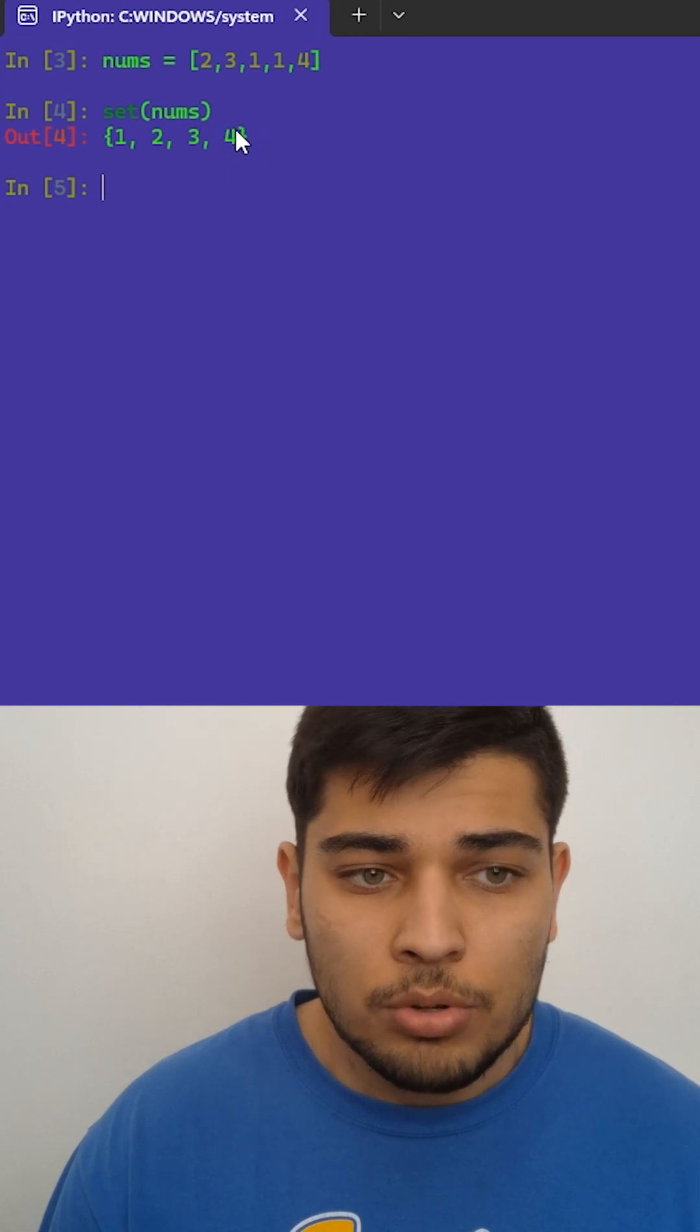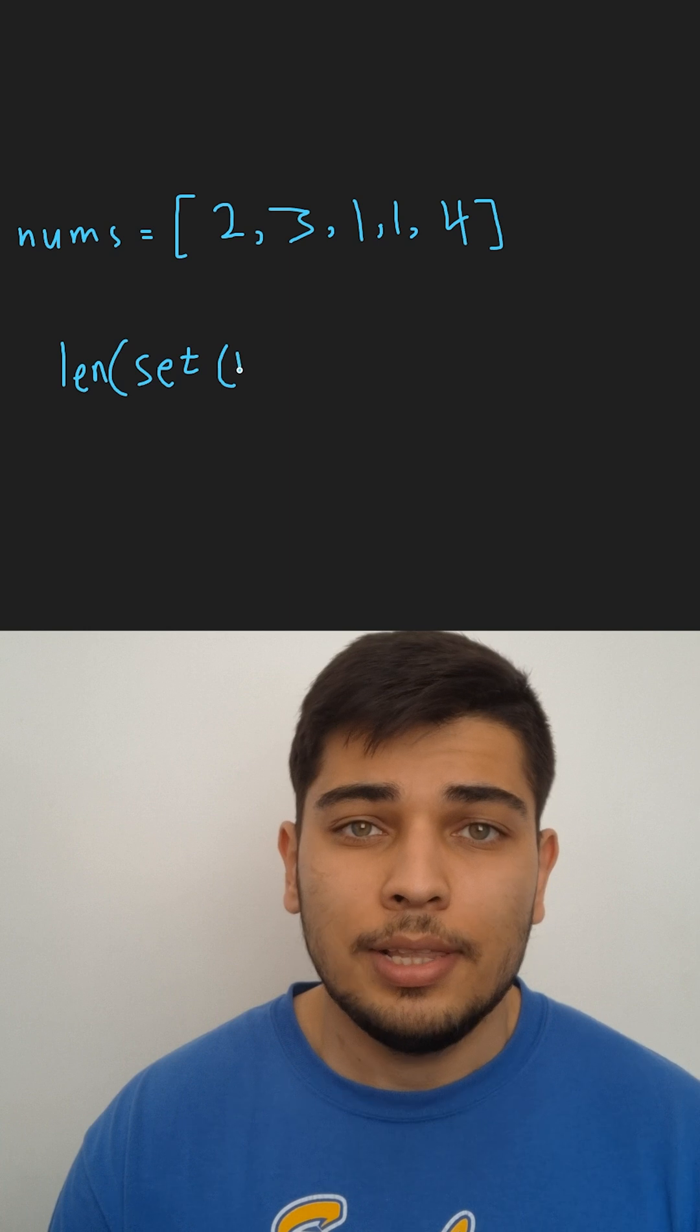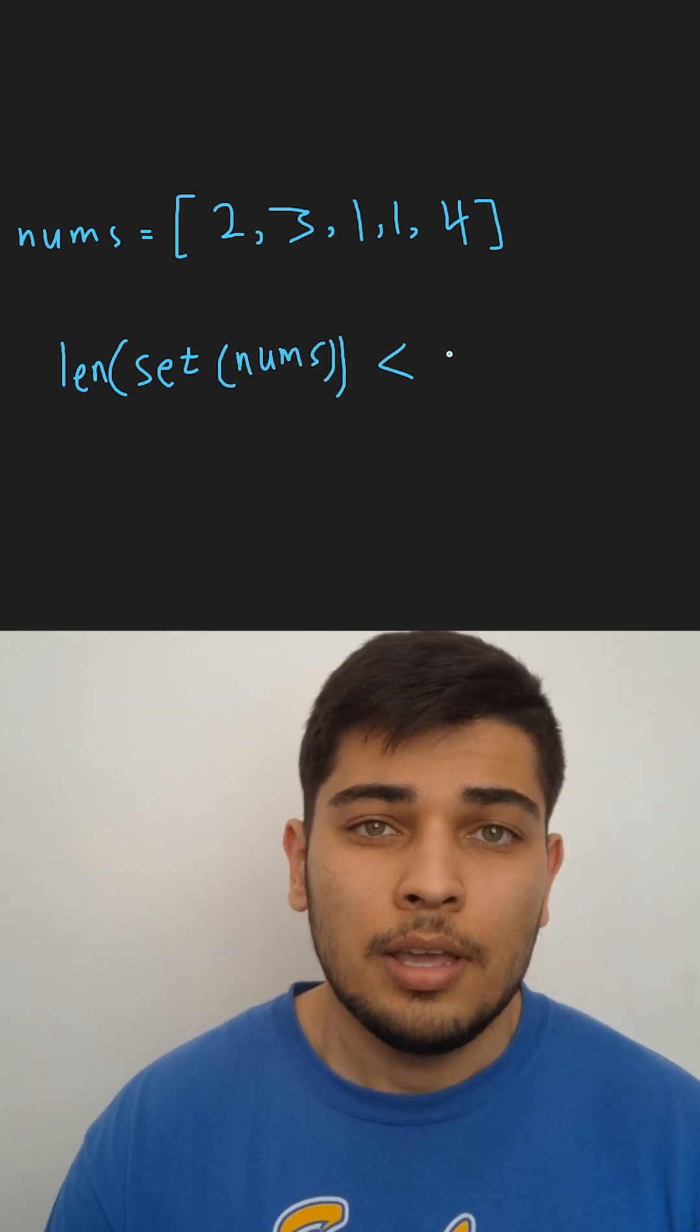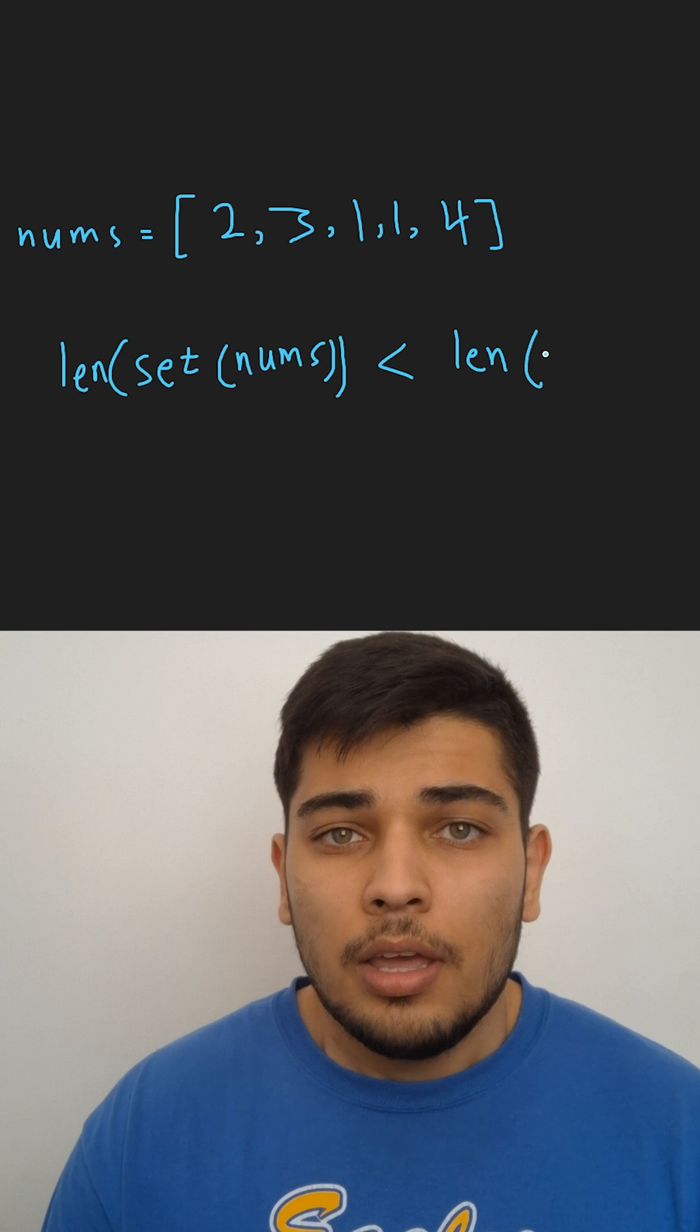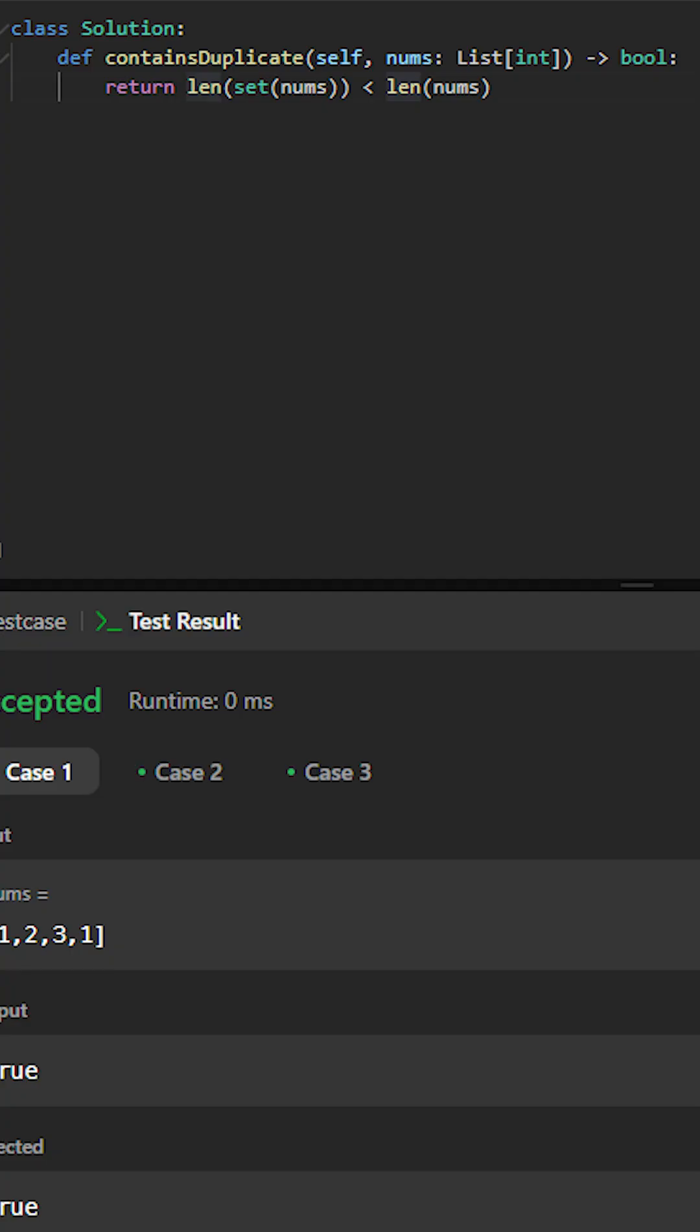So we're going to compare the length of our set and our list. If the set was less than our list, it means that there are duplicates in the list. And if it wasn't, it means the lengths are equal and there are no duplicates, so we should return false.